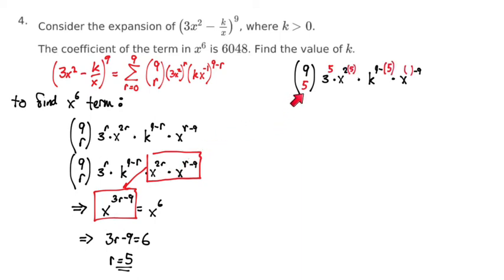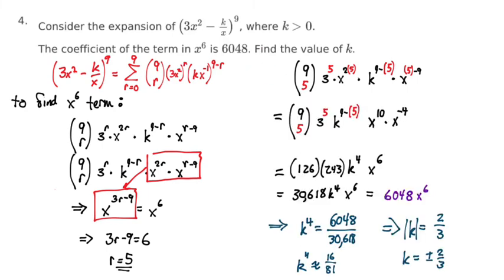Now I know that r equals 5 is the key to finding the coefficient in terms of k. So I use 5 for my r value, I play it all out, and I get these numbers. In the end, I have 30,618k to the fourth x to the sixth, and that's supposed to equal 6048. That's the coefficient that was given on x to the sixth, so this whole number including the k to the fourth has to be equal to 6048. Simple algebra, and you get k equals plus or minus two-thirds. I go back over here, I'm reminded that k must be greater than zero, so we're going to say only keep the positive one.